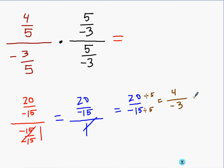So we can write this as 4 over negative 3 or negative 4 over 3. If you had to convert that to a mixed number fraction, you'd end up with negative 1 and 1/3.